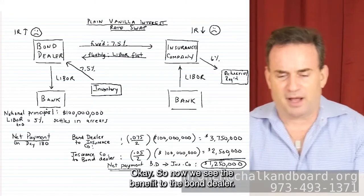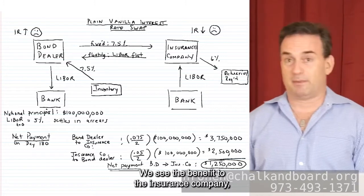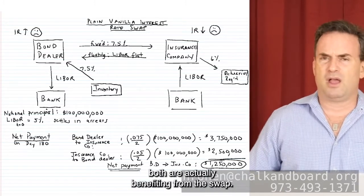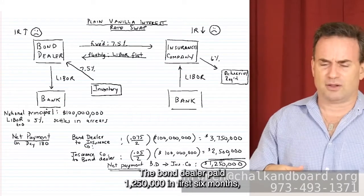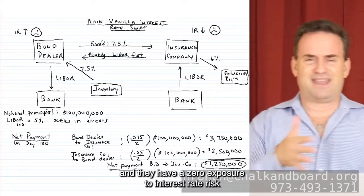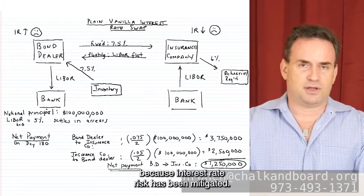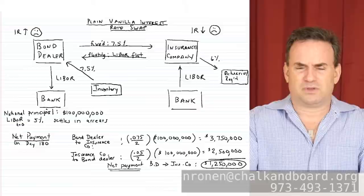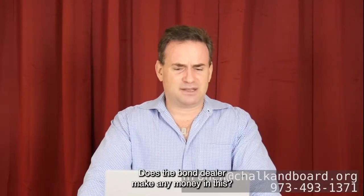So we see the benefit to the bond dealer — mitigated interest rate risk — and the benefit to the insurance company — a locked-in spread. Both are actually benefiting from this swap. You might ask: the bond dealer paid $1,250,000 in the first six months and has zero exposure to interest rate risk — does the bond dealer make any money? Of course the bond dealer makes money if interest rates keep rising, but they're also making money in a different way.